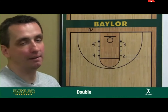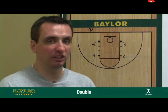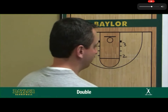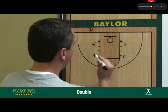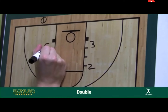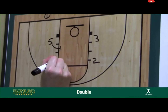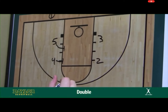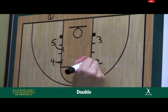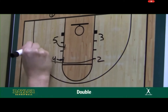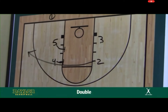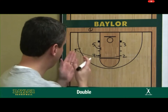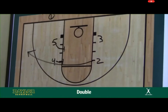The first play we have is what we like to call 'Double.' The one man takes the ball out of bounds. Out of double, the five and the four come up and set a double screen over the top. What we're looking to get first is the two right off the double, coming to the strong side. Obviously, if we get a quick easy bucket, we want to take it.